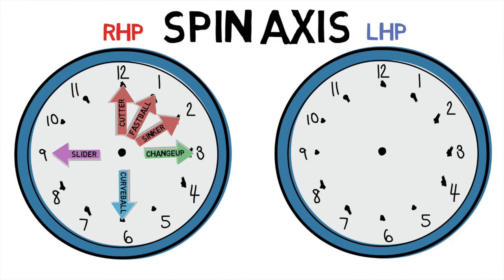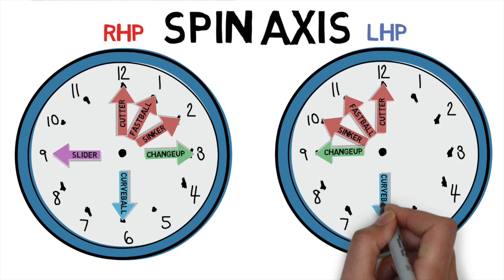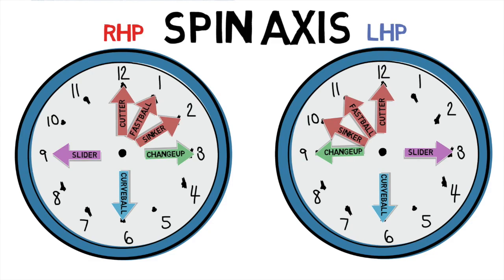For a left-handed pitcher, your fastball would come in at about 11 o'clock, the cutter is still in the noon to 1 range, your sinker is at 10 o'clock, changeup at 9, curveball at 6, and slider at 3.